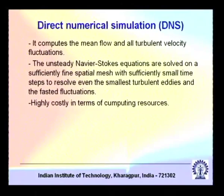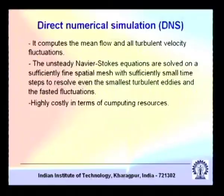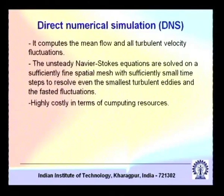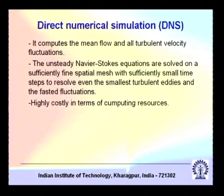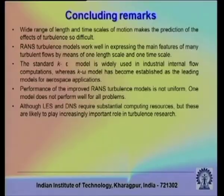In Direct Numerical Simulation (DNS), the Navier-Stokes equations are solved without any turbulence modeling. The unsteady Navier-Stokes equation is solved on a sufficiently fine spatial mesh with sufficiently small time steps to resolve even the smallest turbulence eddies and fastest fluctuations. DNS requires very fine grids and very fine time steps, and therefore even today, DNS solutions exist only for very simple problems.